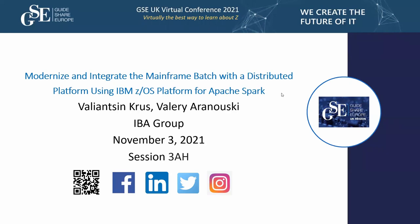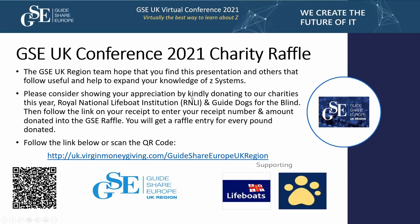In appreciation of the presenters' time and effort, we ask you to give generously to this year's GSE conference charities: the RNLI Lifeboats charity and Guide Dogs for the Blind. For every pound donated, you will receive a raffle ticket — follow the link on your receipt and enter your receipt number to get your ticket.